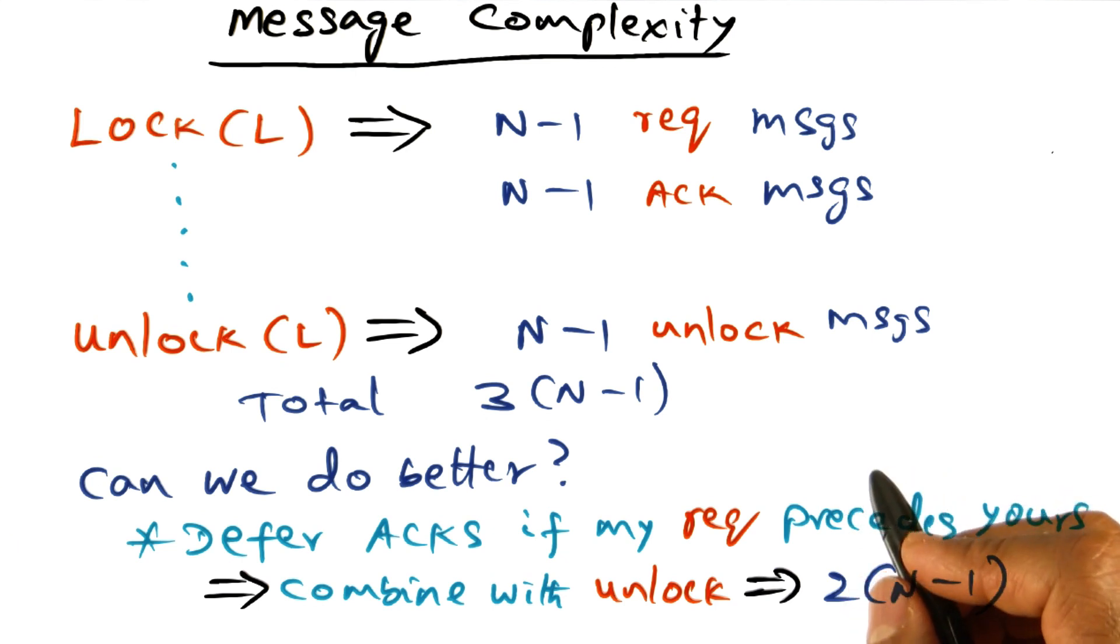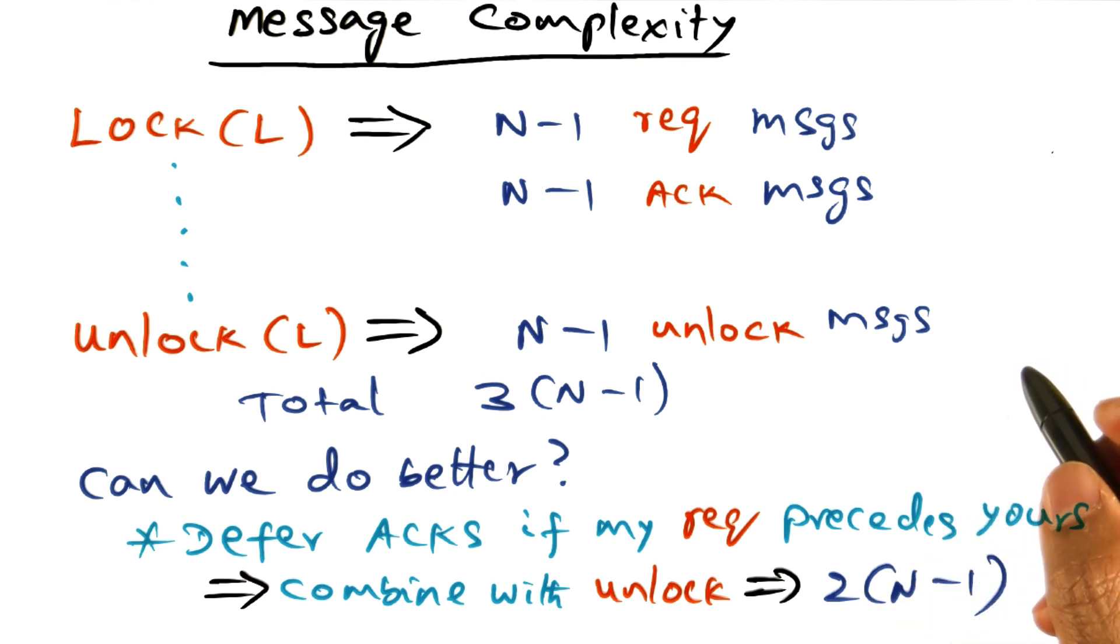By the way, the distributed mutual exclusion lock problem has been a fertile ground for researchers to think about new algorithms that can shave the messaging complexity even further from this 2 times n minus 1. And I invite you to look at the literature to see other works that have been done to reduce the message complexity to even smaller numbers than 2 times n minus 1.